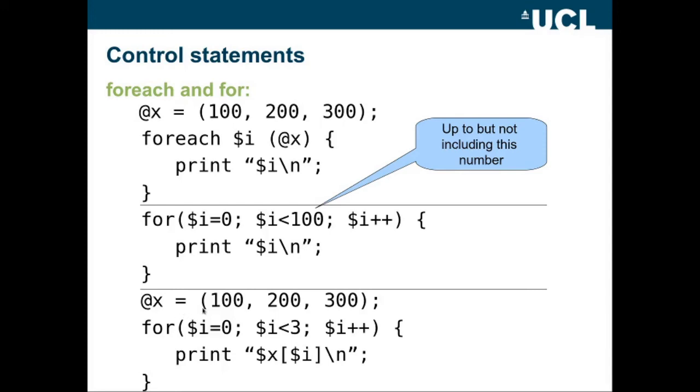The third example kind of combines the two approaches. So we're taking an array called x with the values 100, 200, 300. And then instead of using the for each loop to loop through each item, we're using a for loop to loop through from 0 to less than 3. So 0, 1 and 2. That's position 0, 1, 2 in the array. And we're incrementing the value of i at each step.